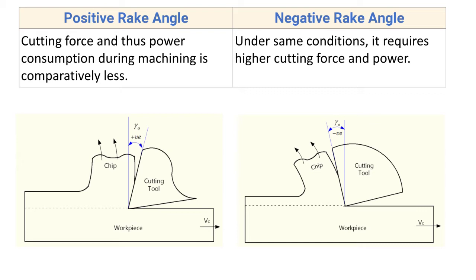For negative rake angle, under the same conditions it requires higher cutting force and power. Under the same conditions — same cutting tool material and same workpiece material — when using negative rake angle, there will be more material at the tool tip, so this end is not as sharp. Hence more cutting force and more power are required to remove the material from the workpiece surface.